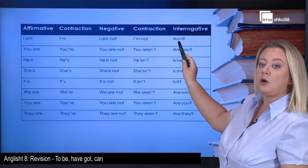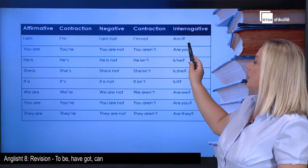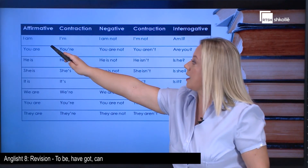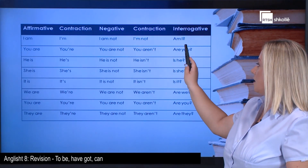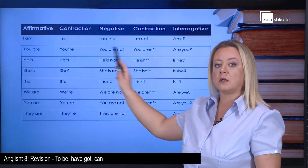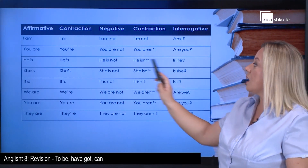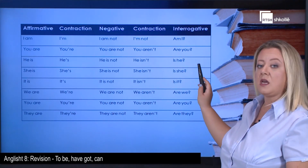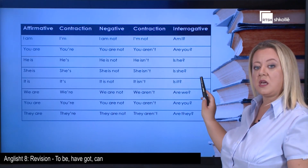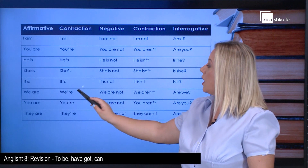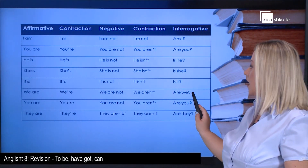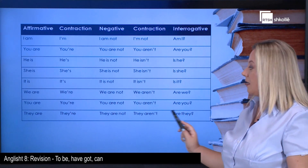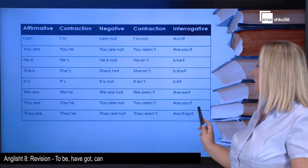To form the interrogative, we change the place of the verb and the personal pronoun that expresses the subject. I am → Am I? You are → Are you? He/she/it is → Is he/she/it? We are → Are we? You are → Are you? They are → Are they?